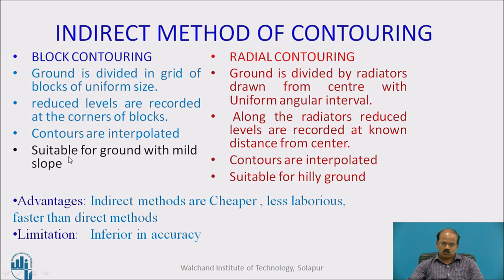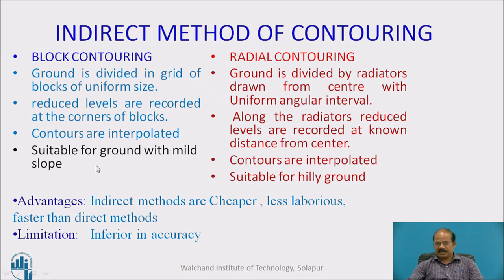Block contouring is suitable for ground with mild slope or flat ground. Radial contouring divides the ground using radiators, records reduced levels at known distances along them, and then contours are interpolated — this is suitable for hilly areas. The instruments used for radial contouring are normally tacheometry-type instruments, while for block contouring we can use any leveling instrument such as dumpy level, auto level, or tilting level.